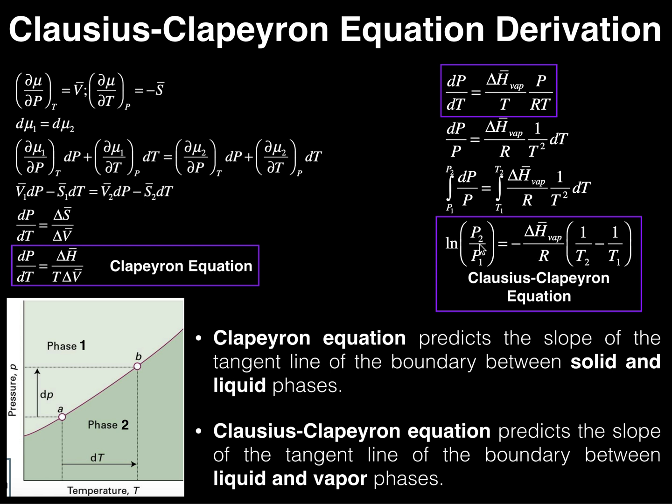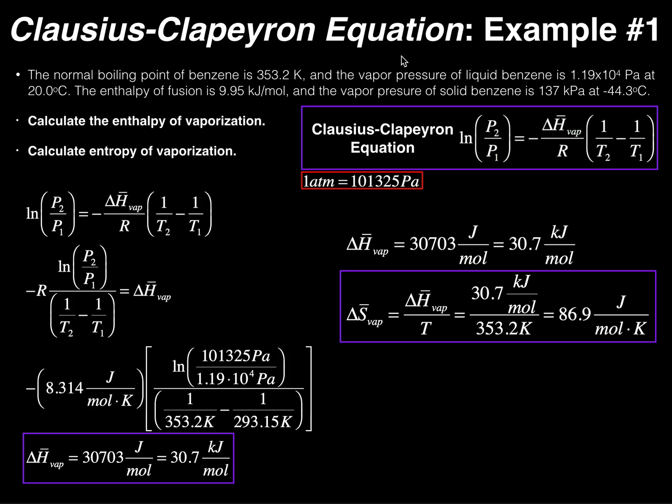But we can actually use this equation now to solve problems in physical chemistry. And so what we're going to do is we're going to do that in the next video. We're going to work an example using the Clausius-Clapeyron equation.